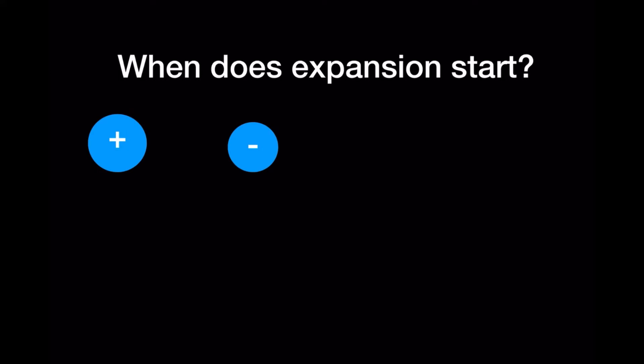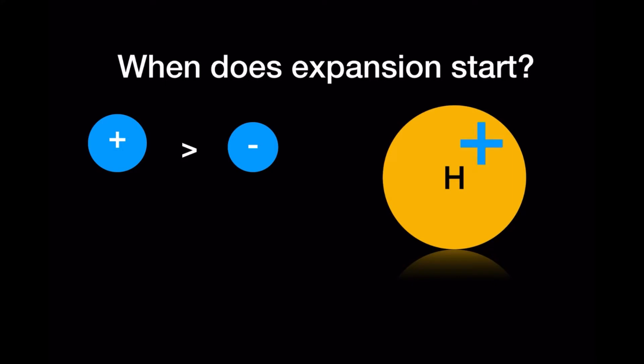The question is: when does the expansion start? The positive charge is greater than the negative charge, so the hydrogen atom carries a net positive charge. Let En be the net charge on the hydrogen atom. En = Ep + Ee = (1 + y)e - e = ye.